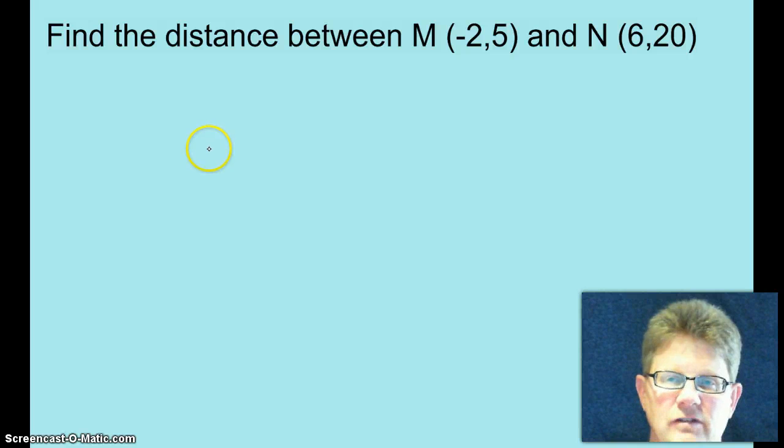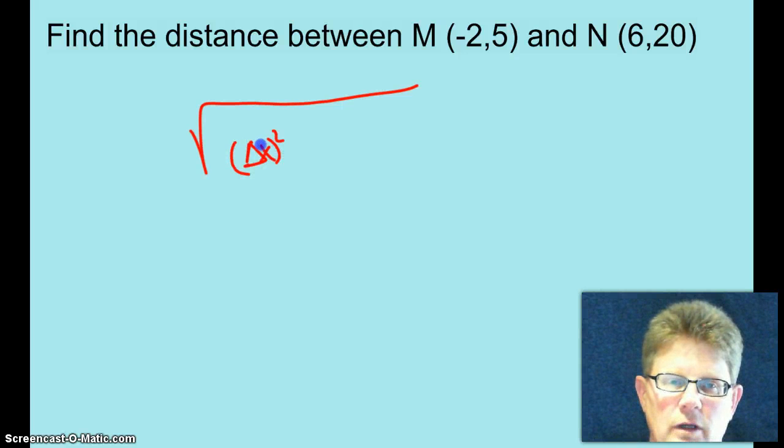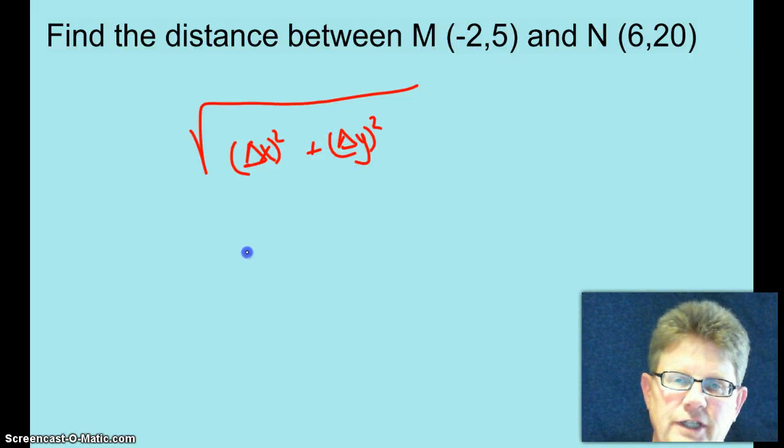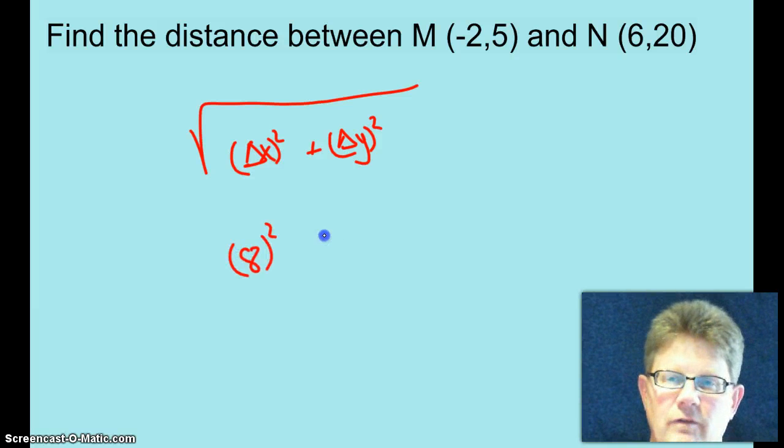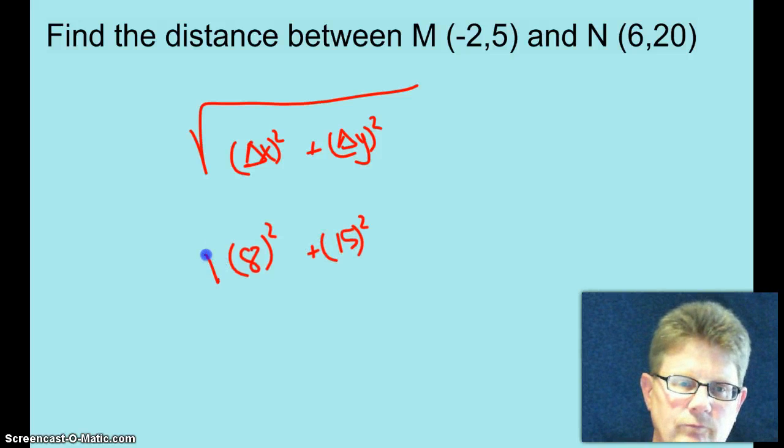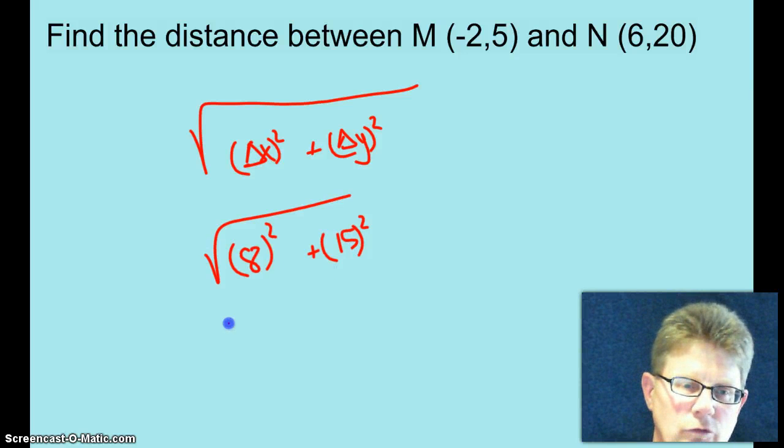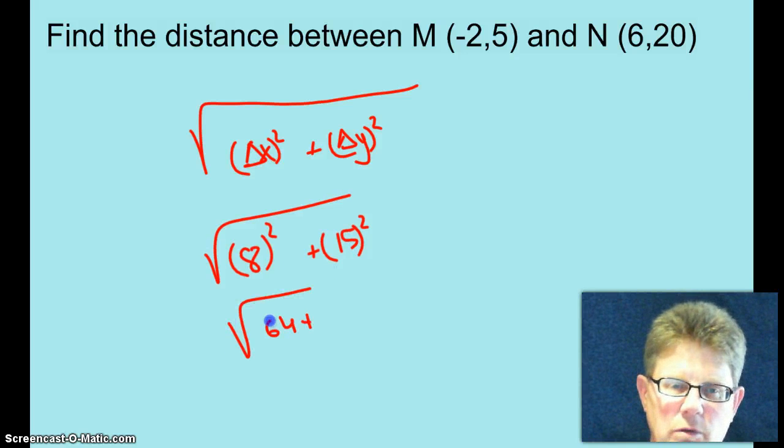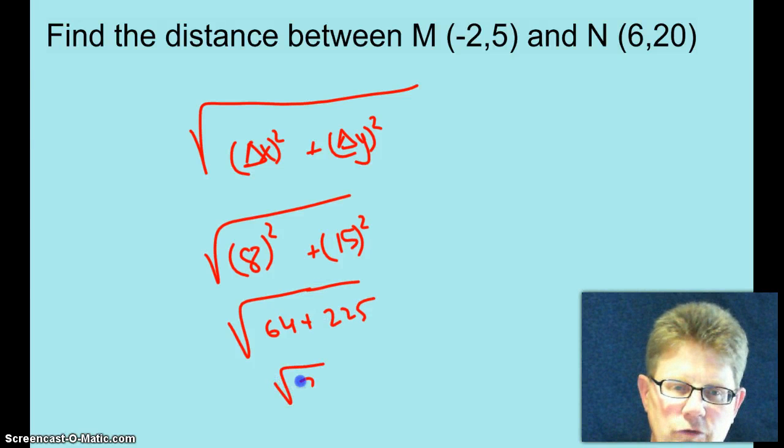Okay, find the distance between negative 2, 5, and 6, 20. Okay, the square root of delta X quantity squared plus delta Y quantity squared. From negative 2 to 6, how much did the X's change? That's right, it changed 8. And then from 5 to 20, how much did the Y's change? You betcha, 15. So square root of 64 plus 225, square root 289.